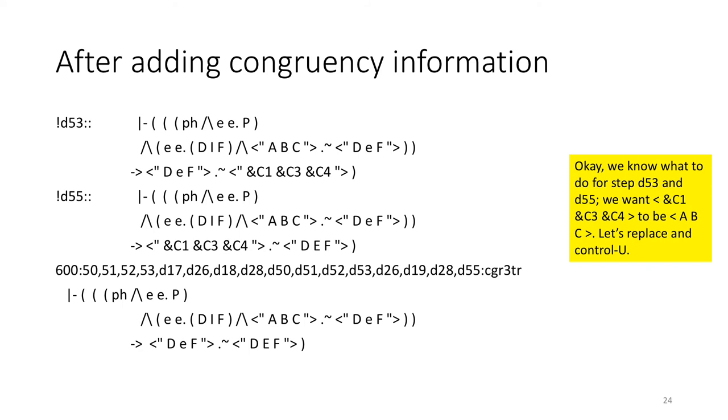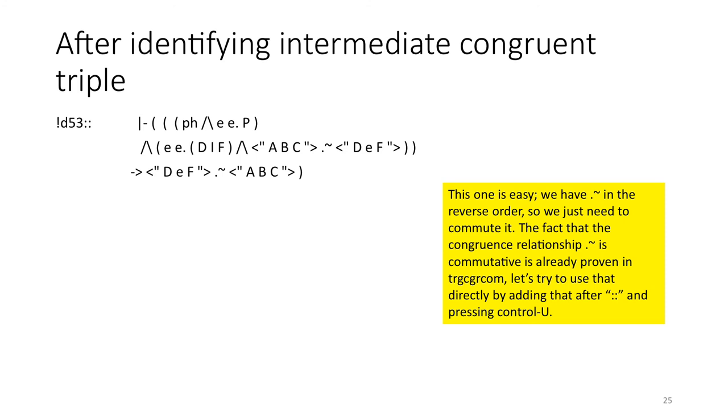Okay, we know what to do for step D53 and D55. We want some C1C3C4 to be ABC. Let's replace and CTRL-U. Excellent. Now this one's easy. We have a congruence in reverse order, so we just need to commute it. The fact that the congruence relationship is commutative is already proven in TRGCGRCOM. So let's try to use that directly by adding that after colon colon and pressing CTRL-U.